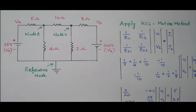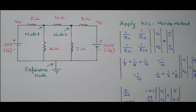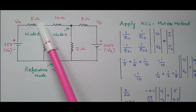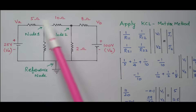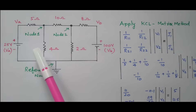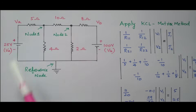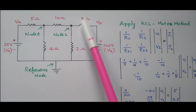Now consider this diagram. There are two voltage sources available: 25V and 100V, and the resistors are connected. We need to assign the nodes — this is the reference node, this is node 1, and this is node 2. The node is nothing but a junction point where elements are connected together. At node 1, the 5 ohm, 4 ohm, and 10 ohm are connected. At node 2, the 10 ohm, 2 ohm, and 8 ohm are connected.